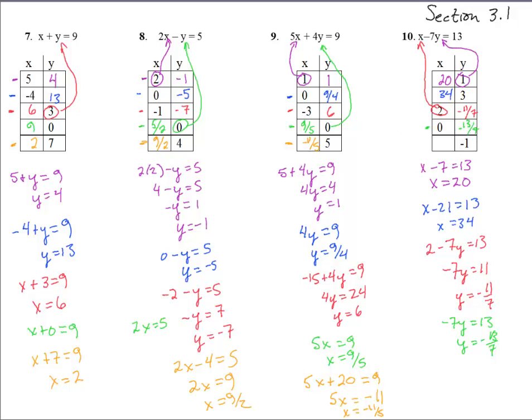And then the last one, we're going to stick in negative 1 where the y is. So we have x plus 7 equals 13. So when we stick in the negative 1 in for y, negative 7 times negative 1 is a positive 7. So we get x equals, subtract 7, subtract 7, we get x equals 6. And there we have it. Good. Good.